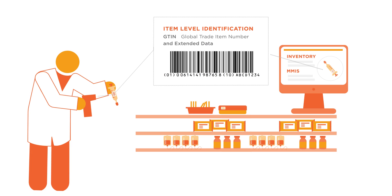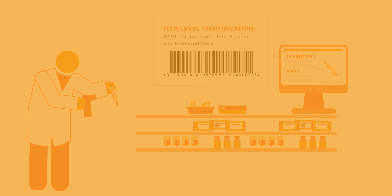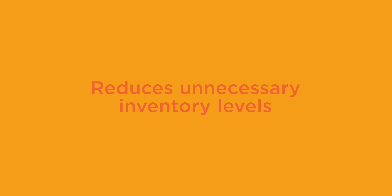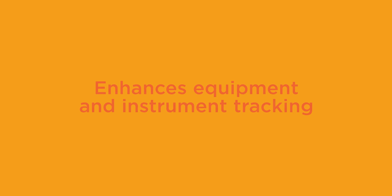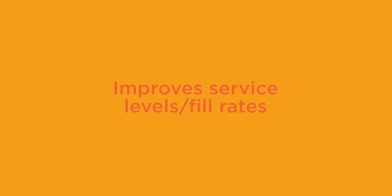In the hospital storeroom, GTINs are used at the point of receipt to validate delivery accuracy and put products into inventory. GDSN product data is used to populate the item master file. This reduces unnecessary inventory levels, enhances equipment and instrument tracking, and improves service levels and fill rates.